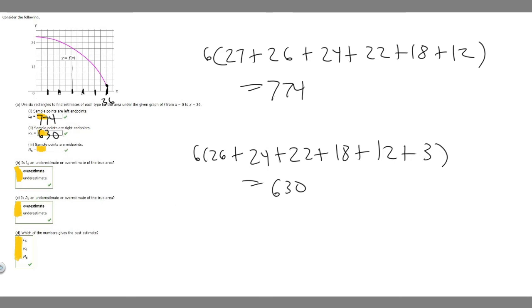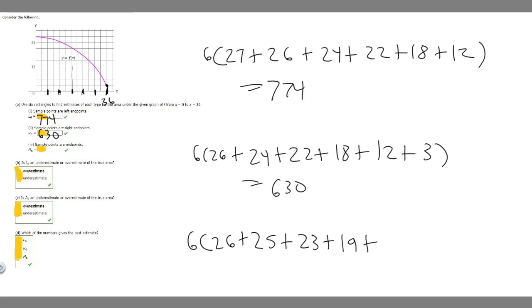Now let's do the midpoint. We do 6 times the sum of the middle values of each interval. The midpoint of the first interval looks to be about 26, then 25, then a little less than 24 — so 23, then about 19, then about 15, and our final midpoint looks to be about 8. Multiplying all these by 6, you should get 696.